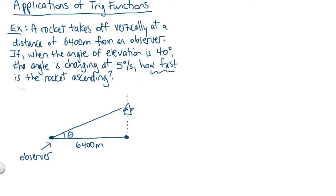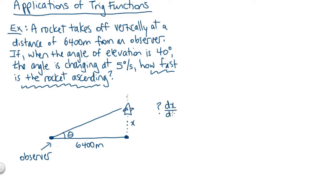To answer this question, we're going to need to keep track of the rocket's vertical position. Let's say this vertical distance that the rocket has traveled — let's call it x. You could call it y or give it any other name, but let's say x in this problem. So we've got two variables: the rocket's height and the angle of elevation.